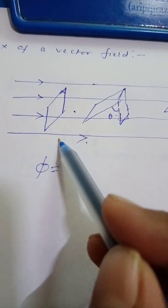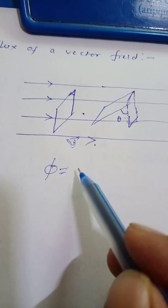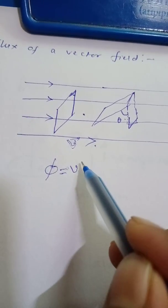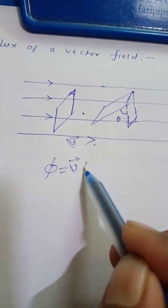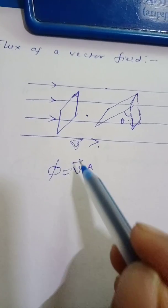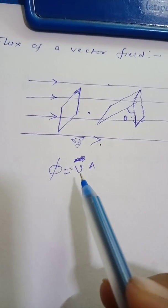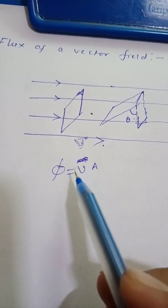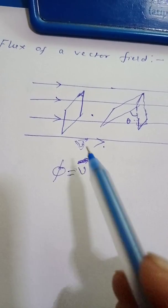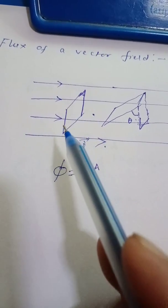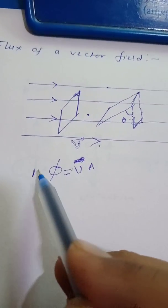If V is the velocity of flow, then volume of liquid flowing through this loop in one second must be equal to V into A. V is the velocity of the flow and A is the area of the loop, and V into A represents the volume of the liquid which is flowing through this loop in one second. This is what I am talking about — this is the first figure.